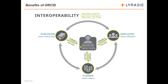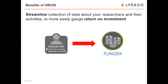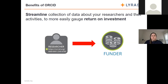ORCID really benefits everyone when used consistently across the ecosystem. Because it is increasingly widely used and interoperable across various systems, you can use ORCID to streamline the collection of data about your researchers and their activities to more easily gauge your return on investment. To get an idea of the impact your funding is having, you need to collect information about your researchers and their activities — and ORCID allows researchers to easily store and share this information with the organizations they work with.